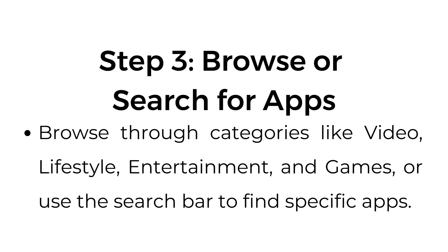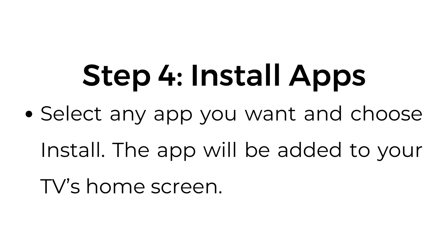Browse or search for apps. Browse through categories like video, lifestyle, entertainment, and games, or use the search bar to find specific apps. To install apps, select any app you want and it will be added to your TV's home screen.